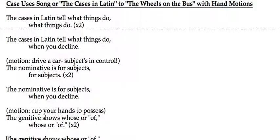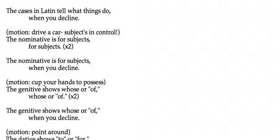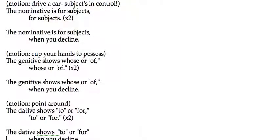The genitive shows who's and of, who's and of, who's and of. The genitive shows who's and of when you decline.